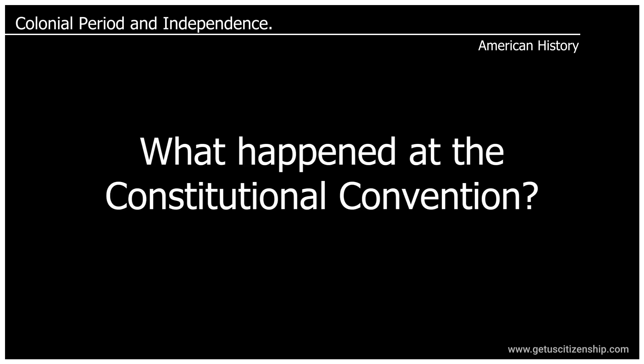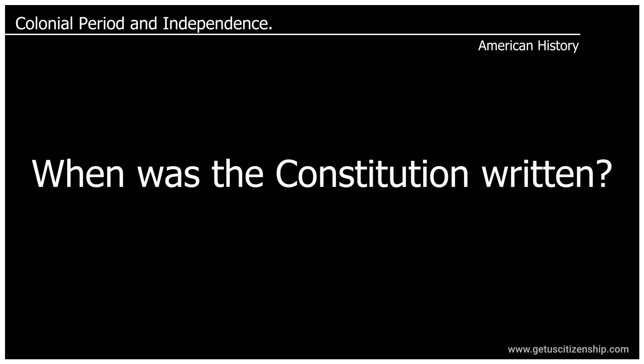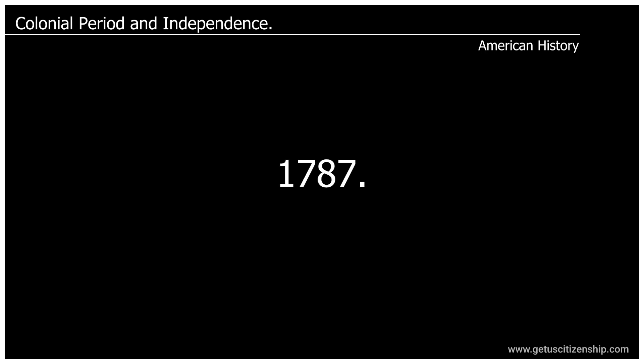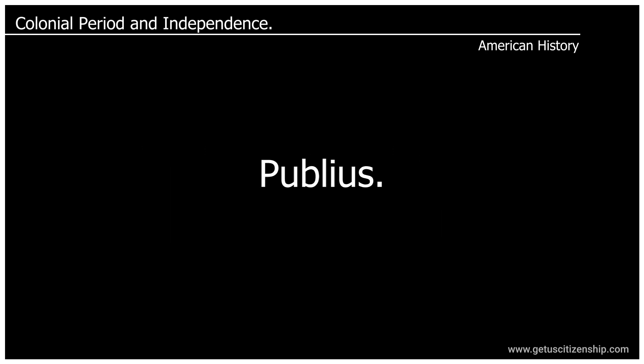What happened at the Constitutional Convention? The Constitution was written. When was the Constitution written? 1787. The Federalist Papers supported the passage of the U.S. Constitution. Name one of the writers. Publius.